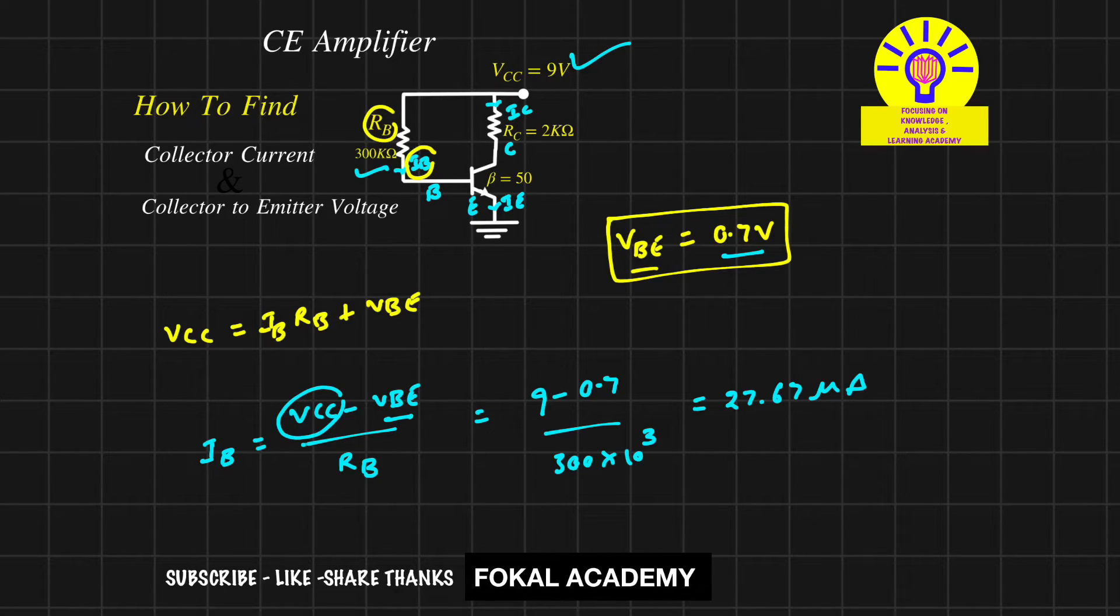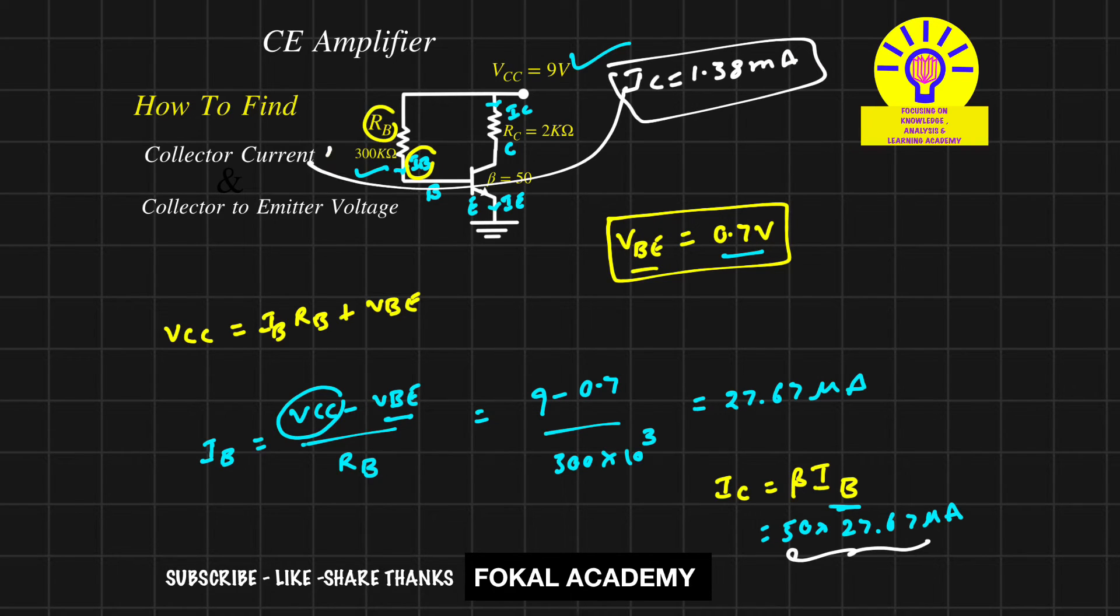For the problem, we want the collector current. We know the relation: collector current IC = β × IB, where β is the current gain, given as 50. Substituting, IC = 50 × 27.67 microamperes. By simplifying, we get collector current IC = 1.38 milliamperes.